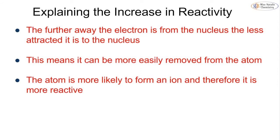So the further away the electron is from the nucleus, the less attracted it is to the nucleus. That means it can be more easily removed. And the more easily removed the electron can be, the more likely it is to form an ion.